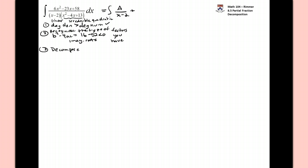But when you have an irreducible quadratic, it decomposes to be some linear term, bx plus c, all over the original irreducible quadratic, x squared minus 4x plus 13. And the goal would be to integrate these two fractions that we end up with, if we can. That would be our goal.